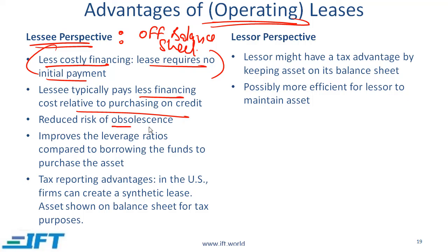Reduced risk of obsolescence. You are using this earth-moving equipment and after two or three years a much better piece of equipment comes into the market. If you don't own that equipment, you are not stuck with it. Because of leasing you are simply renting it, so if that equipment is no more as useful as some newer equipment, you are not stuck with it — reduced risk of obsolescence. Leasing also improves your leverage ratios compared to borrowing funds to purchase the asset.